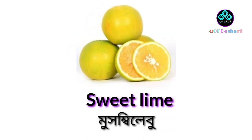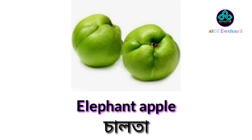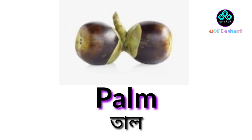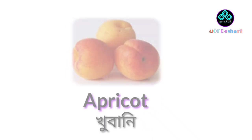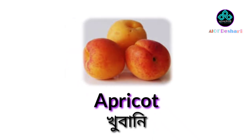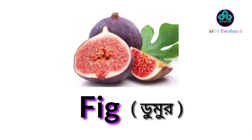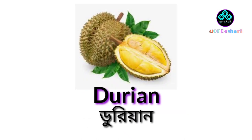Sweet lime means musumbi. Lemon means lebu. Elephant apple means chalta. Palm fruit means taal. Apricot means khubani. Muskmelon means khurbuz. Fig means dumur.